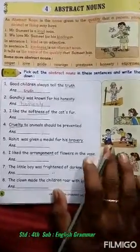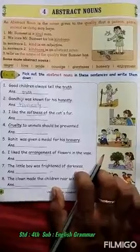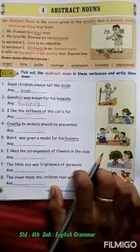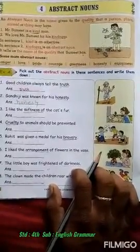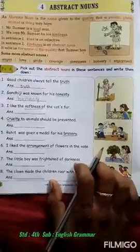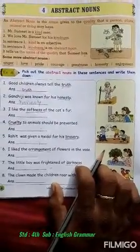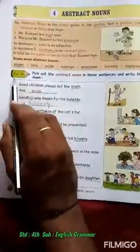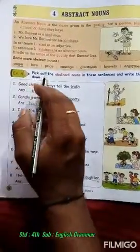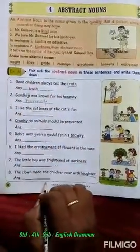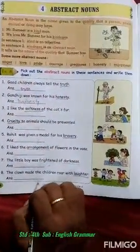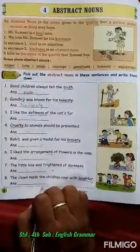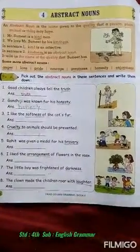I think you understand abstract noun now. What is the homework? In your HW notebook, write the name of the lesson and Exercise A — solve it two times in your HW notebook. Ok. Thank you.